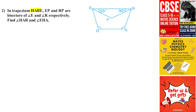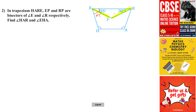We have trapezium ERHA. EP and RP are the bisectors of angles E and R respectively. EP is the bisector of angle E, so angle E is split into 25° and 25°. RP is the bisector of angle R, so this angle is 30° and this is also 30°.